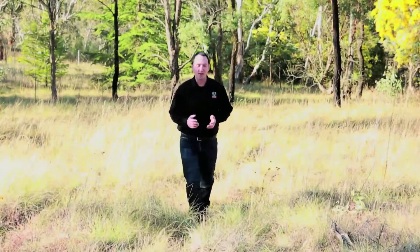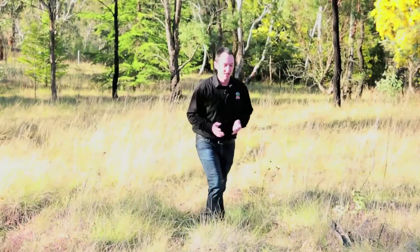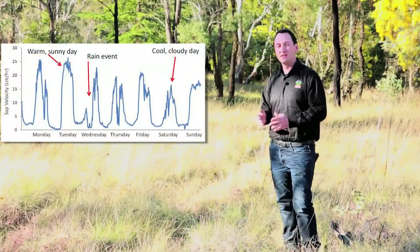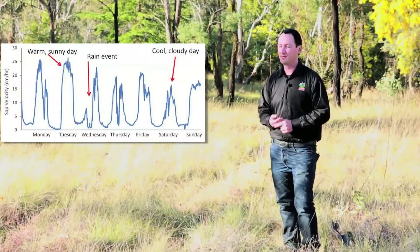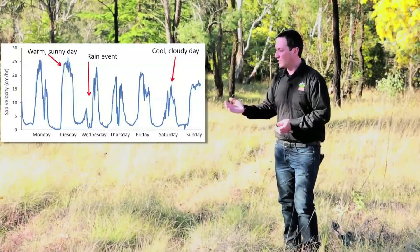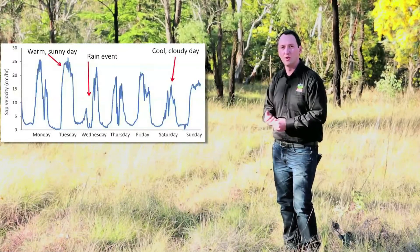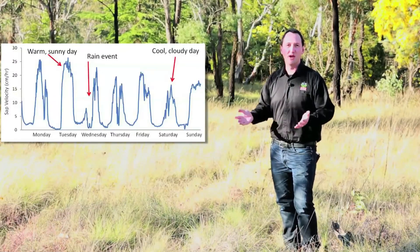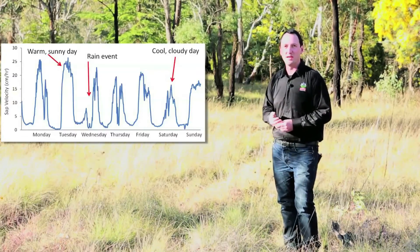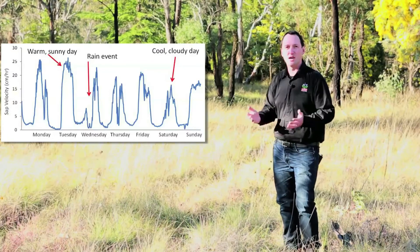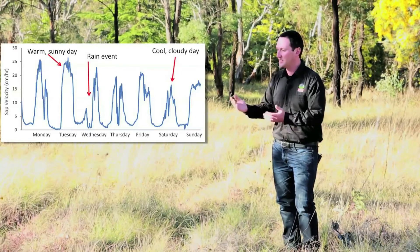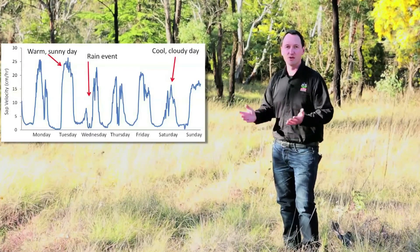Your sapflow is going to look different depending on the species you measure, the time of day, and the time of year that you measure. Here is an example data set of seven days of sapflow data during a summer period. Early in the week we see high sapflow rates — it is nice sunny weather. Then on Wednesday we see sapflow increase in the morning but then drop suddenly. A storm or some rain event has occurred. It then cleared and sapflow resumes on its way. Later in the week sapflow has become half of what it was earlier in the week. This is an example of cool and cloudy weather. As you can see, just over one week sapflow can vary quite a lot.